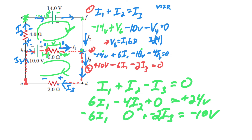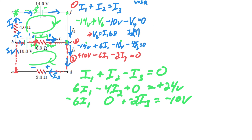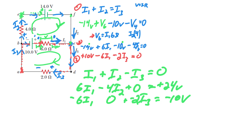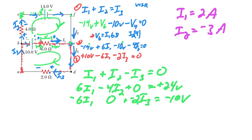I'll leave it up to you to solve it — maybe I'll make a part two video showing how to use a matrix. When I solve this I get I1 equals 2 amps, I2 equals negative 3 amps, and I3 equals negative 1 amp. We'll talk about what those negatives mean in a second.